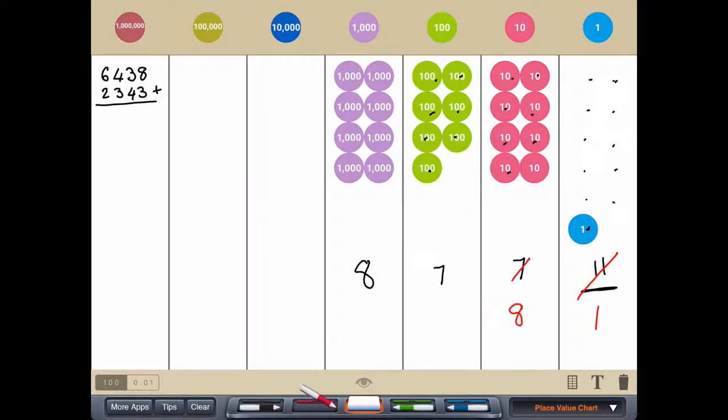And if I show what that looks like over here on our place value in our columns column addition, we've got 8 plus 3 which remains 11, so we put the 1 and we'd regroup up here. We've then got 1 plus 3 which is 4, and then 4 more makes an 8. 4 and 3 makes 7, and then 6 and 2 makes 8. So we end up with 8781.